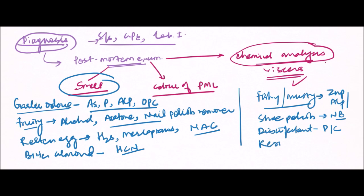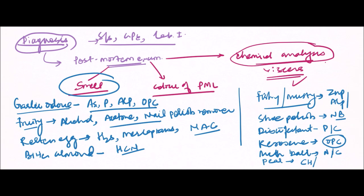The kerosene-like smell comes from organophosphorus compounds, because these compounds are dissolved in kerosene before use. Moth ball-like smell comes from naphthalene balls and camphor. A pear-like or acrid pear-like smell comes from chloral hydrate and paraldehyde. These are examples of poisonous substances identifiable by characteristic smell at post-mortem.